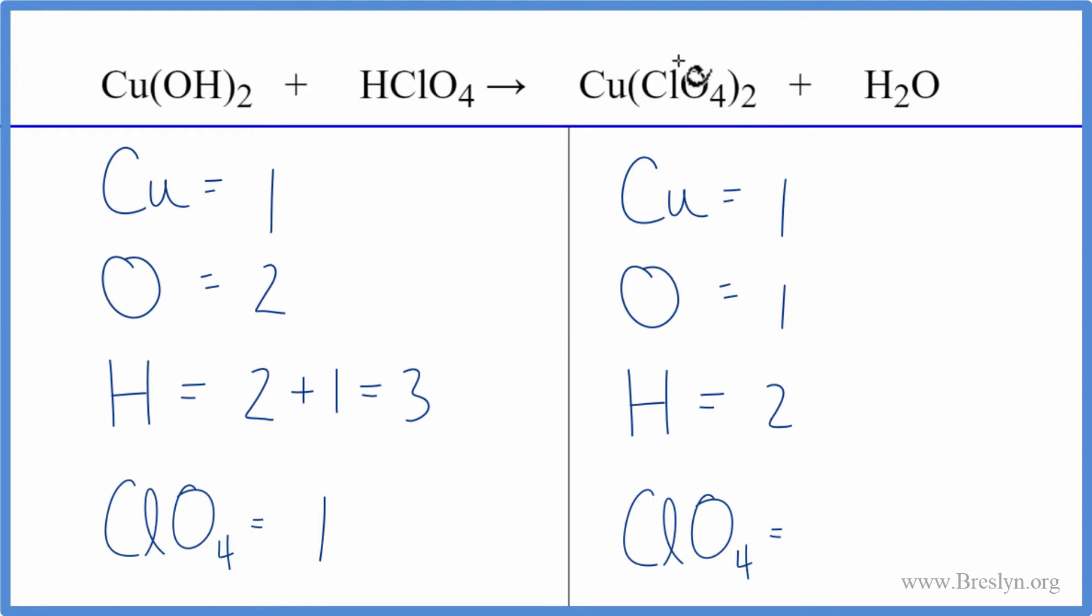Let's leave the hydrogens till last and the oxygens till last. We have two here and one here, put a two in front of the HClO4, so now we have the one times the two, we have two of those, that's balanced.